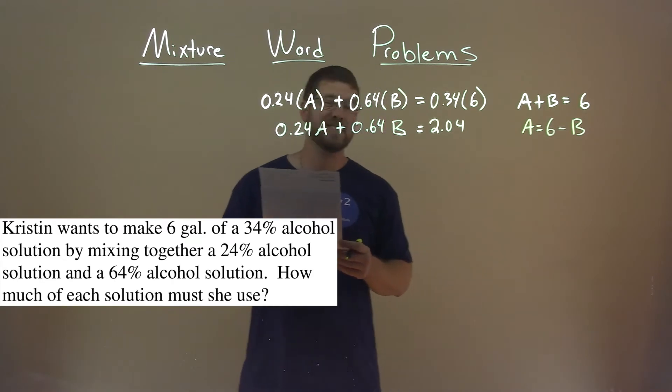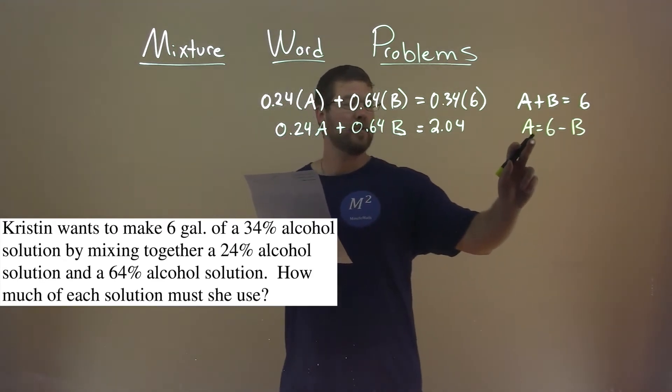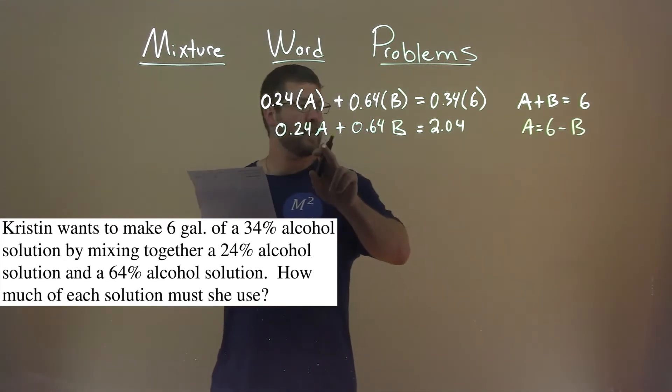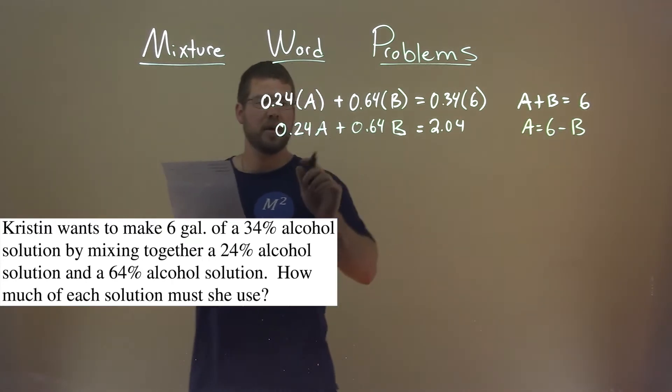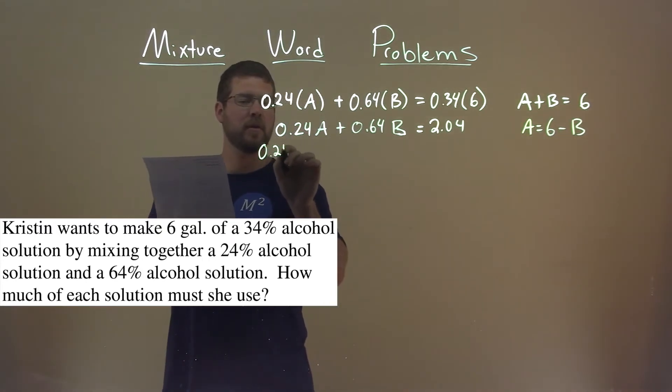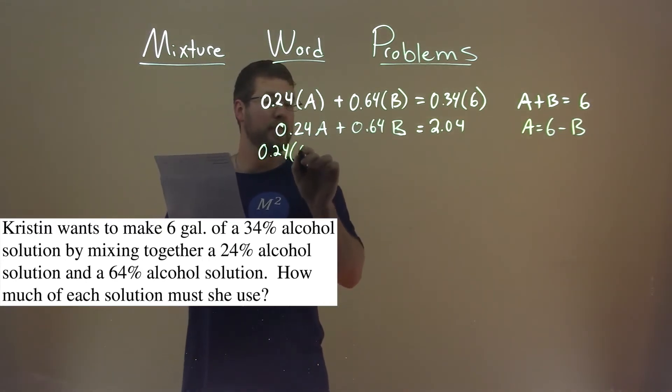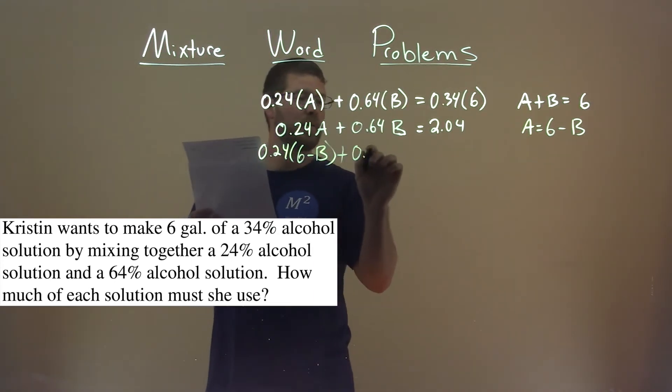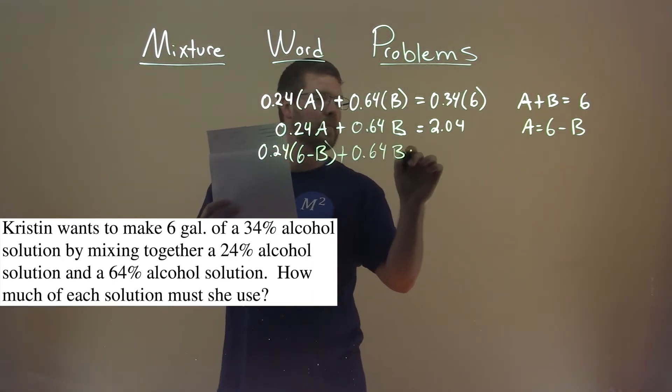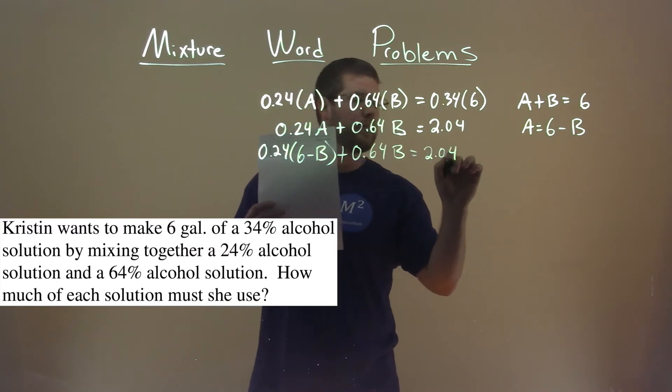Now we can solve by substitution. We're going to substitute this A, and for this A. So we take the 6 minus B here, and for that A, we have 0.24 times, instead of A, 6 minus B plus 0.64B is equal to 2.04.